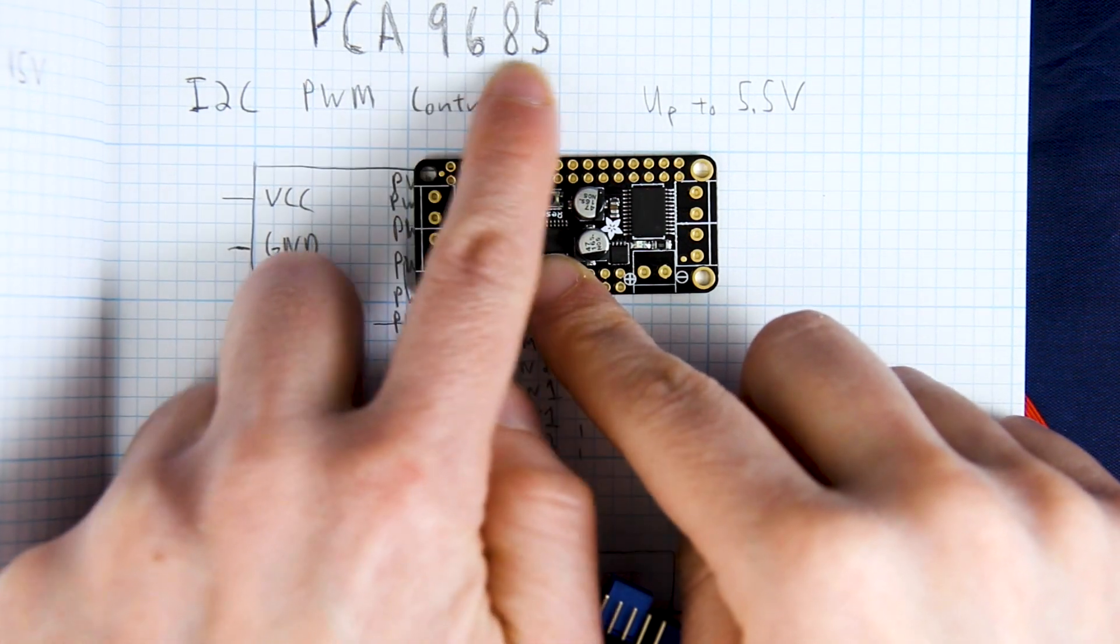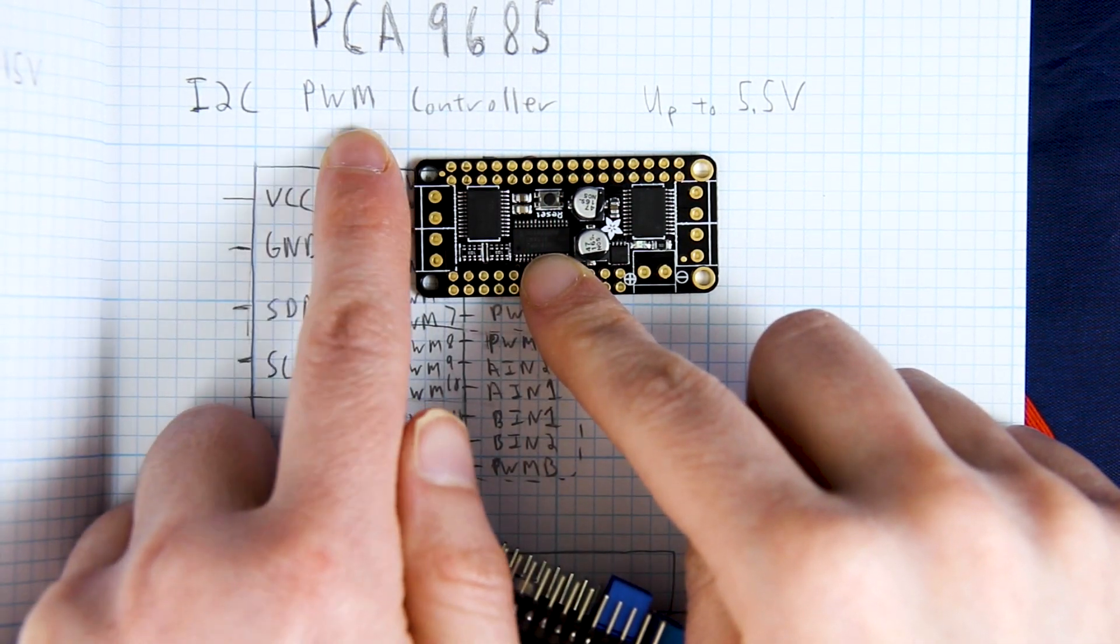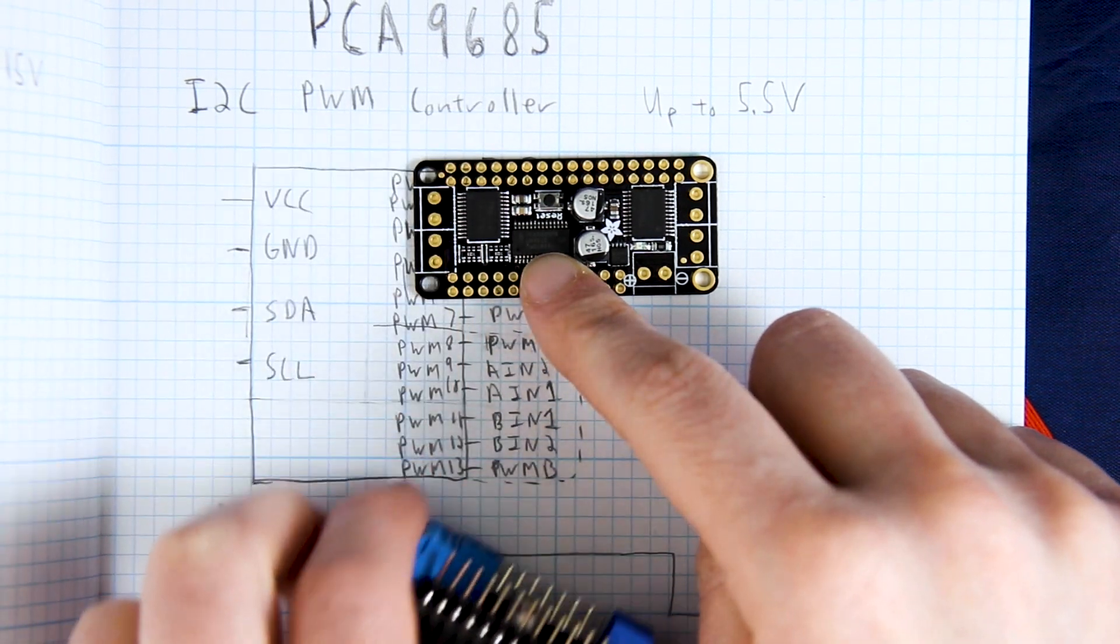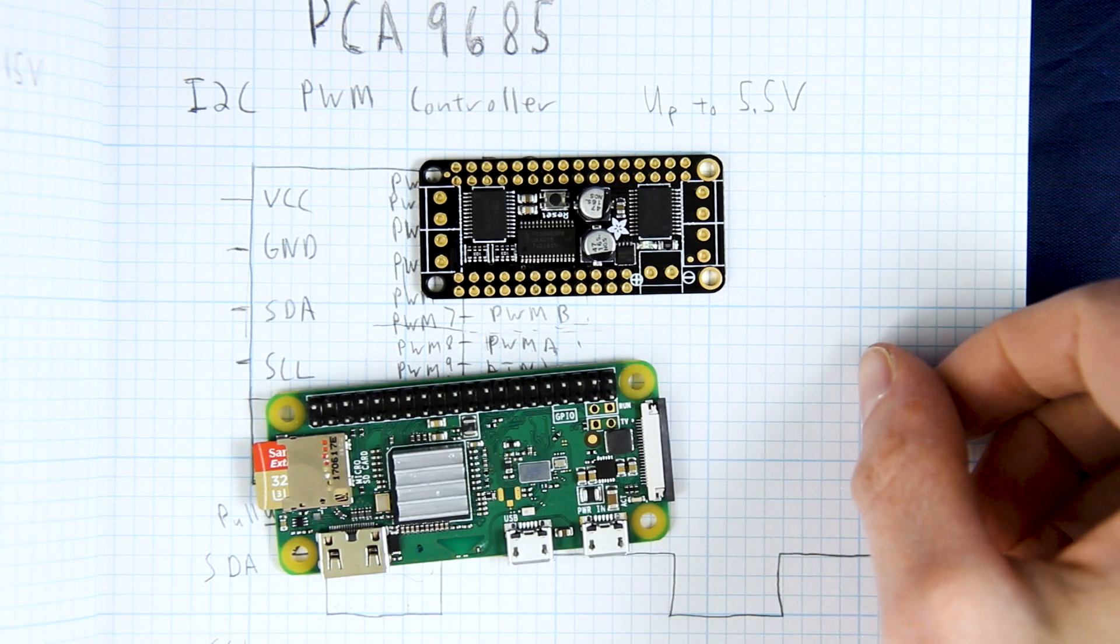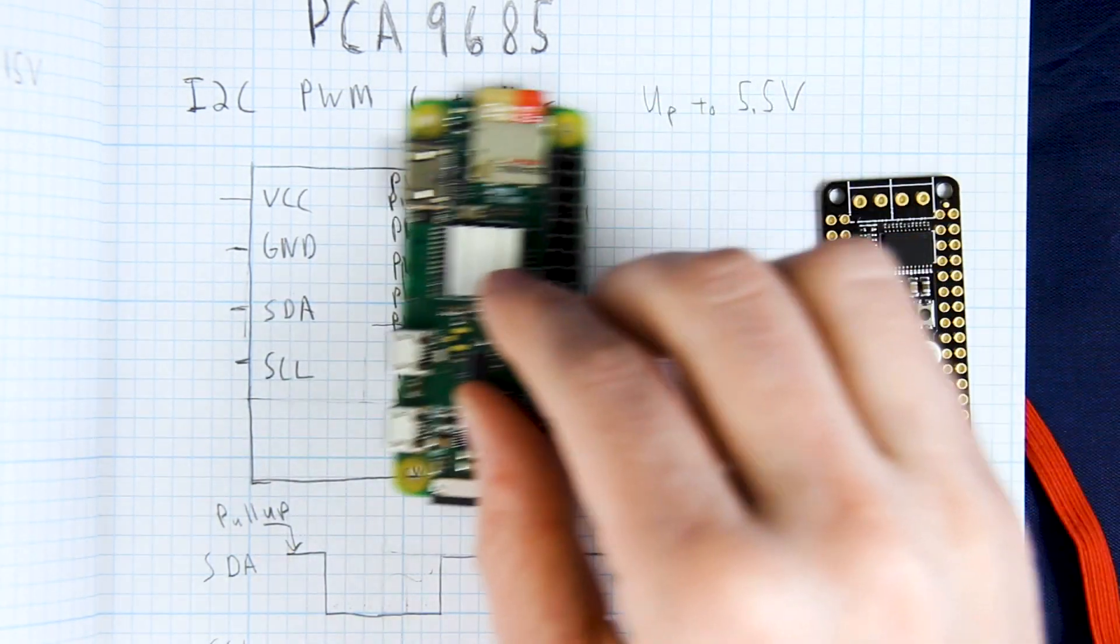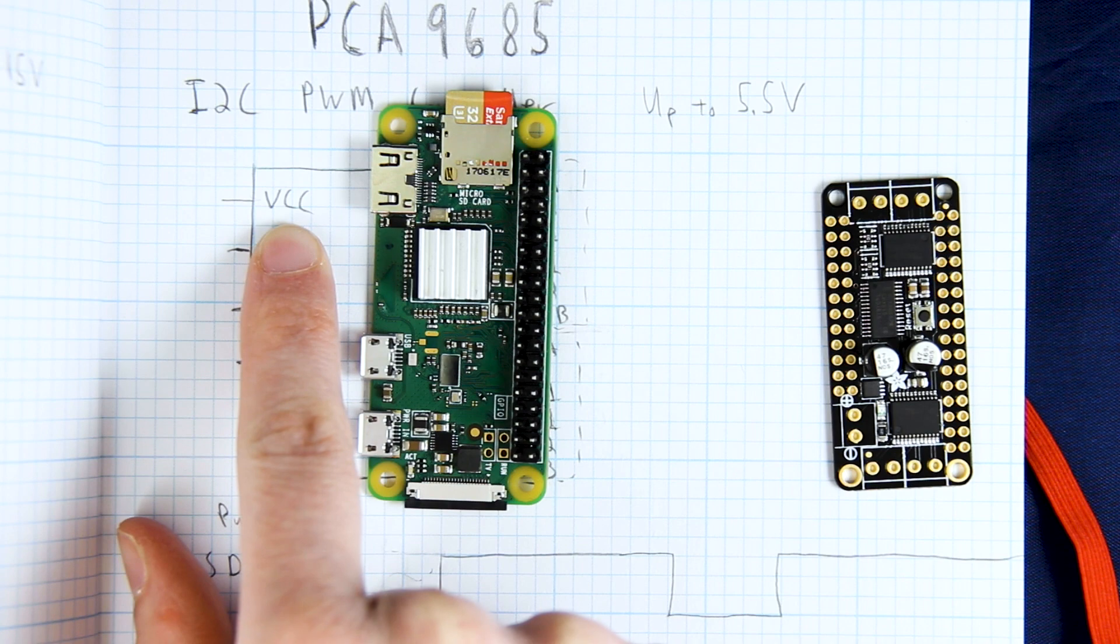So this third one, this PCA9685, is an I squared C PWM controller. So how do we deal with this board and the Raspberry Pi?